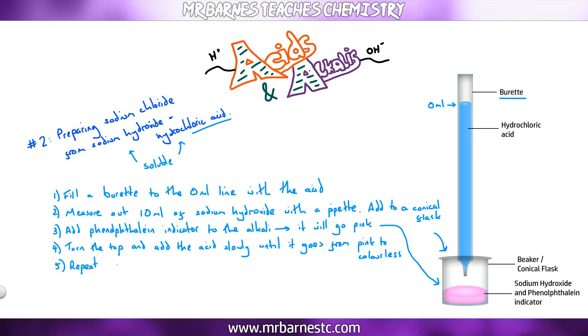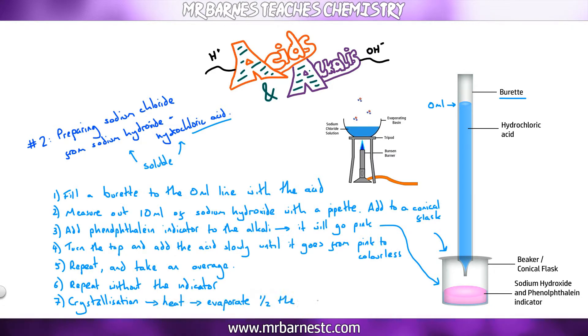Once you've done that, repeat all those steps again. Take an average. Once you have your average you then need to repeat it without the indicator. Reason for that being it must be pure. If you have your indicator in there your sodium chloride crystals will not be pure because you'll have phenolphthalein with them. So you must do it without an indicator. Once you've done that, use your crystallization technique. Place your sodium chloride solution into an evaporating basin, heat it, evaporate off about half the water, leave it to cool and you'll get your sodium chloride crystals.